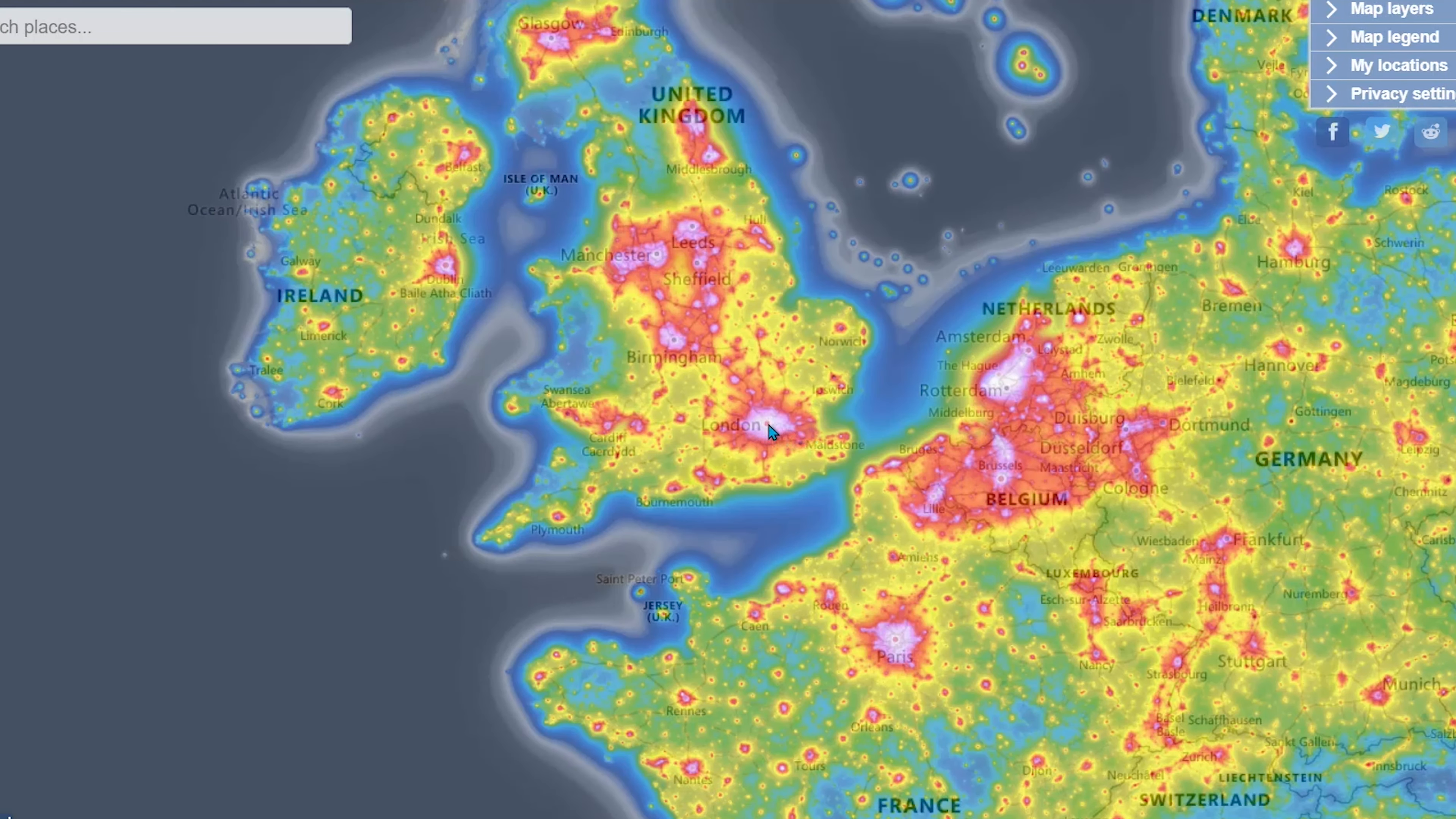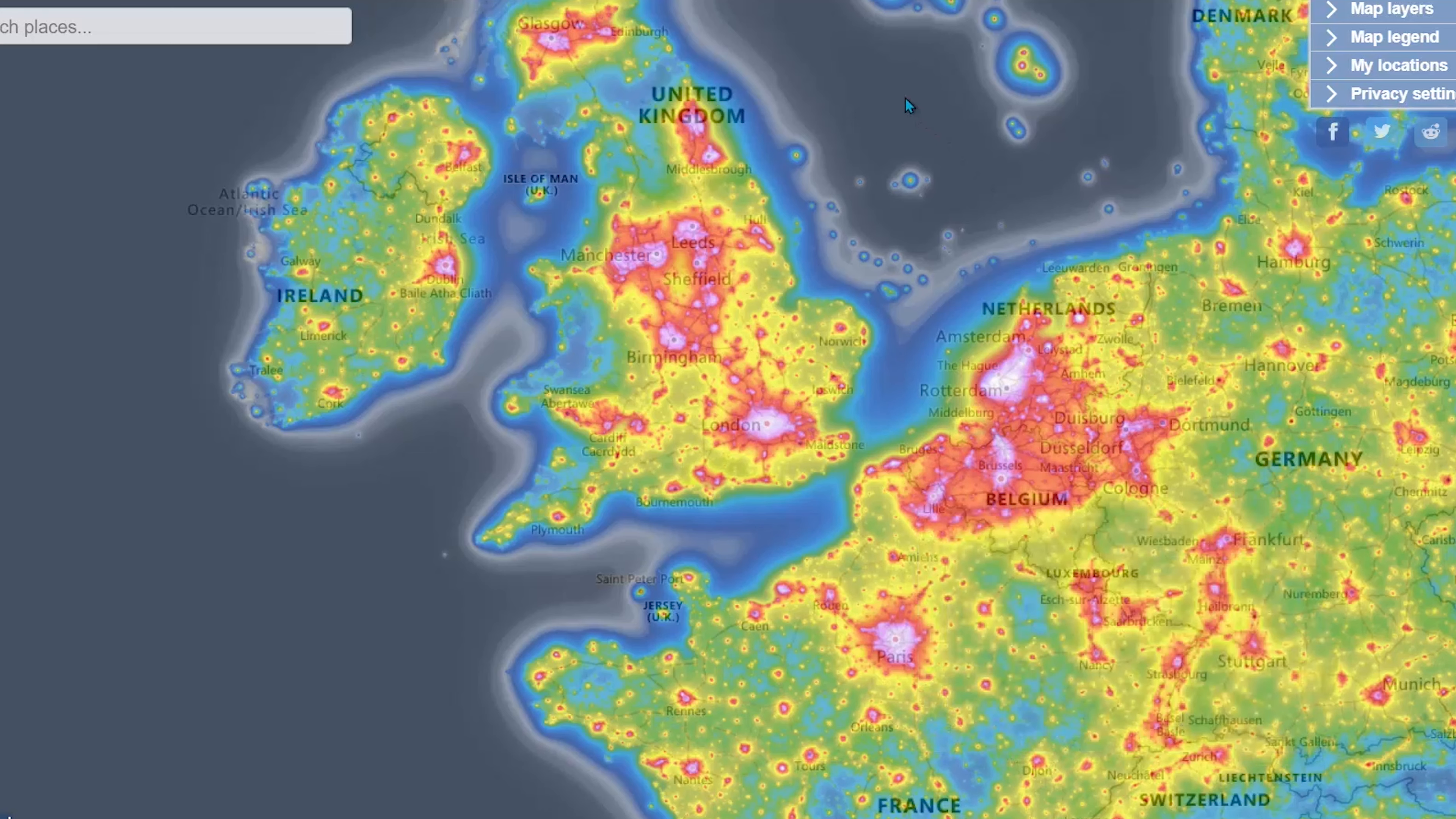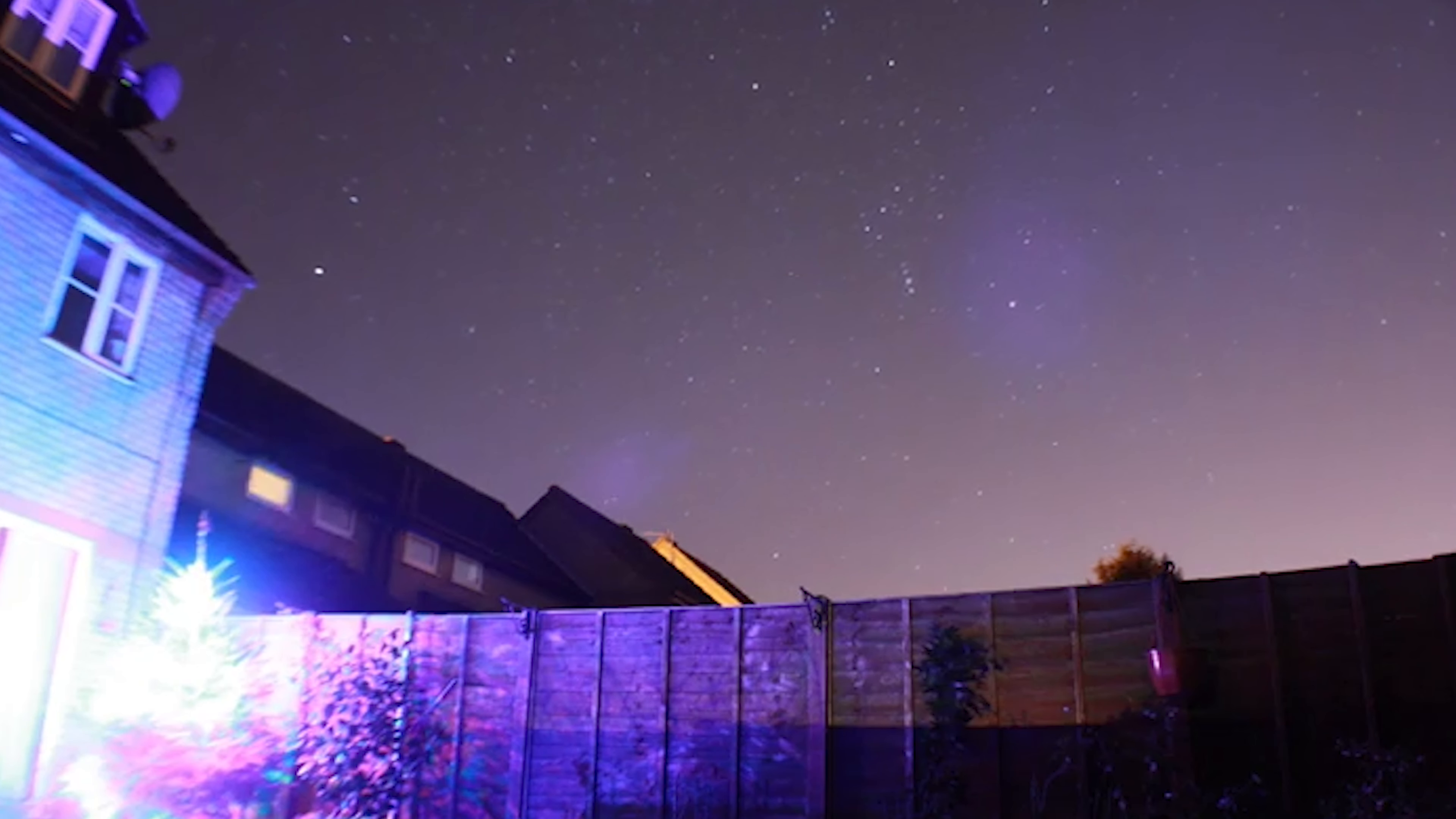The Bortle scale is a way of ranking the night sky's brightness in a particular location. There are nine levels, with one being an excellent location with no pollution allowing you to see the full cosmos, and nine being the worst. Each year more and more of our planet becomes a location where the Bortle scale is nine. But even at a high number, it doesn't mean you can't enjoy the stars in our night sky. My own back garden is a six on the Bortle scale but I can still see plenty.